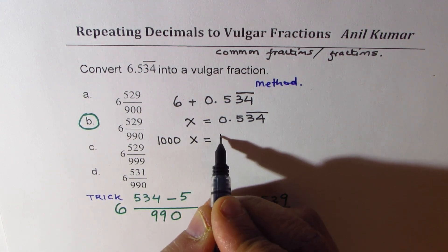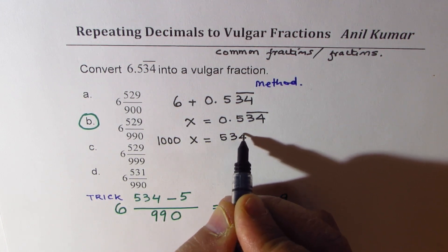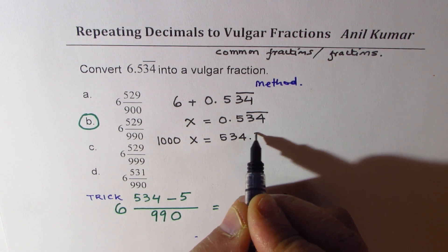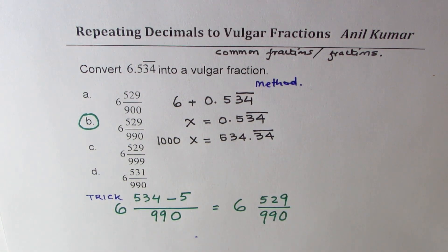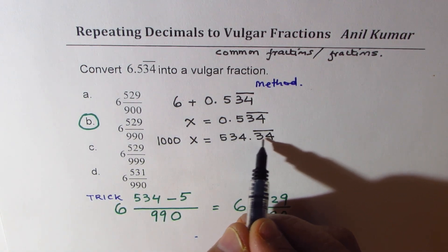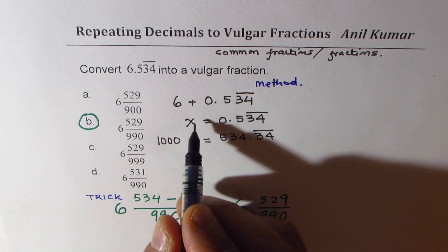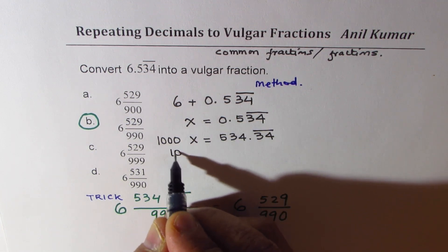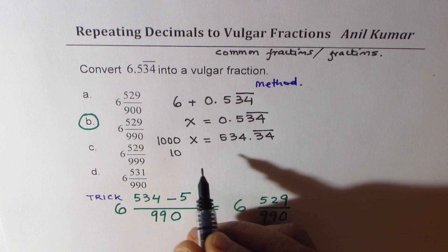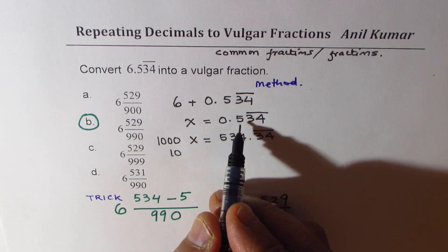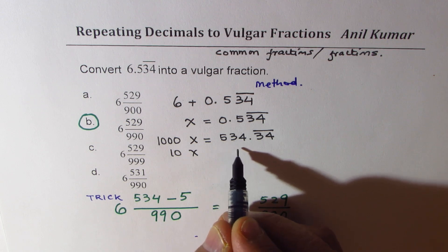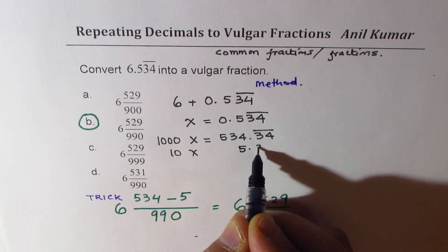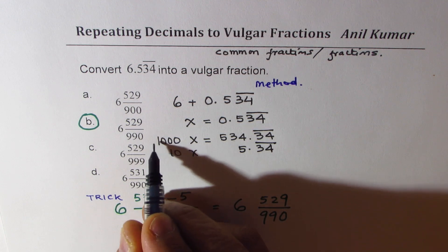Now we can multiply this by 1000 so we get 1000x is equal to 534.34 recurring. Now we have to somehow get rid of this 34 recurring, so what we will do is we will multiply x by 10. This is a very standard method. When you multiply by 10x this number you get 5.34 recurring.